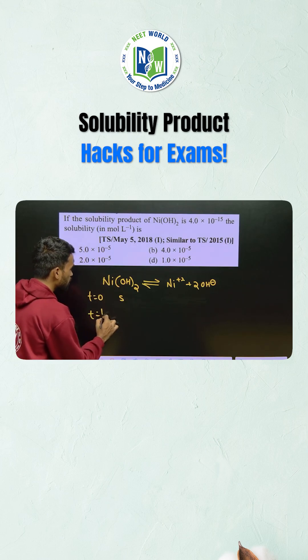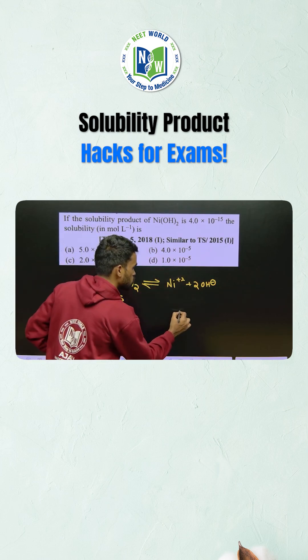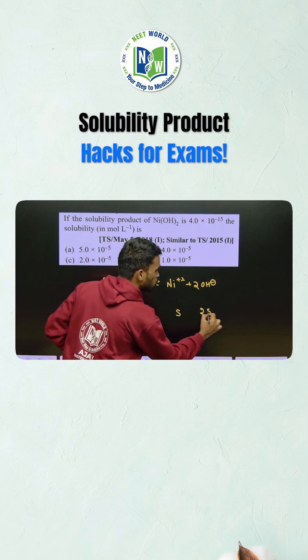At equilibrium, what happens? This is a salt that is converting into its ionic forms, right now. So here S and this will become 2S.